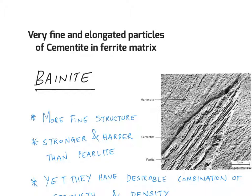As shown here, bainite microstructure consists of very fine and elongated particles of cementite in a ferrite matrix. So these are the very fine and elongated cementite particles that you can see here inside a ferrite matrix. This portion is the bainite microstructure.